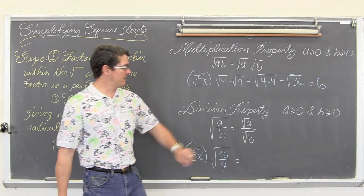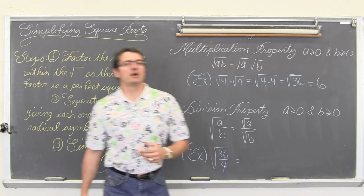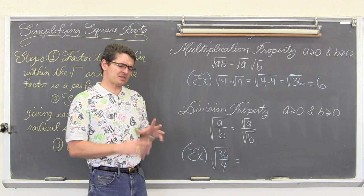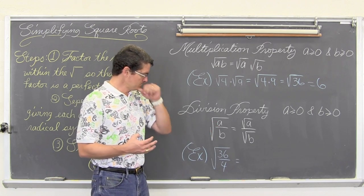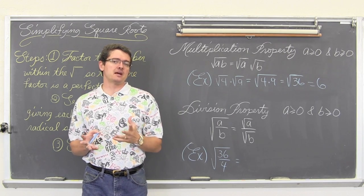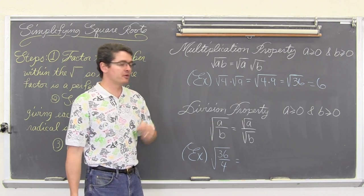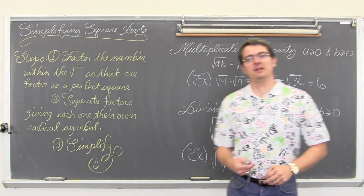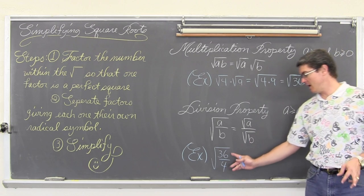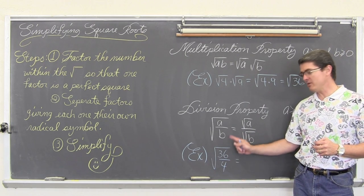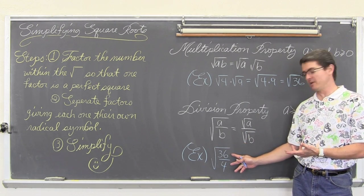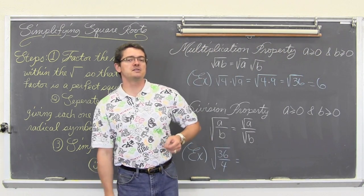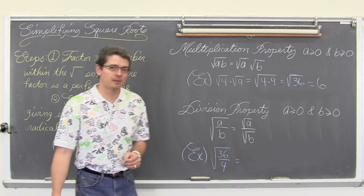The division property is also going to get used. Again, our a and b values have to be greater than or equal to zero, because you can't square root a negative number. That property says we can give each factor inside the division its own square root symbol. So the square root of a divided by b is equal to the square root of a divided by the square root of b. Let's do it in our head first: 36 divided by four is nine, and the square root of nine is three, so we should get three.